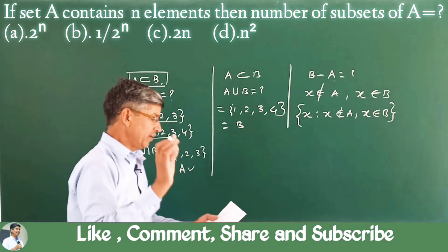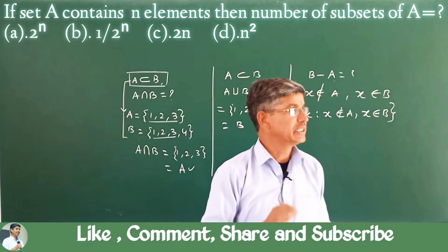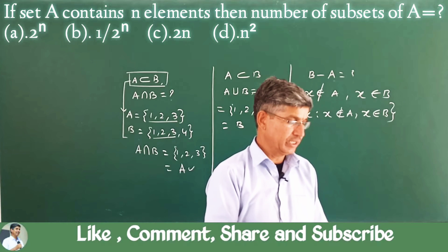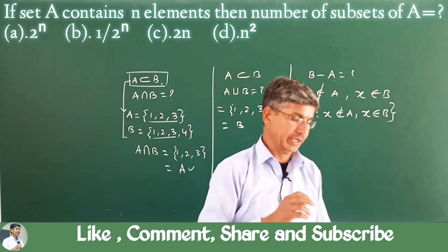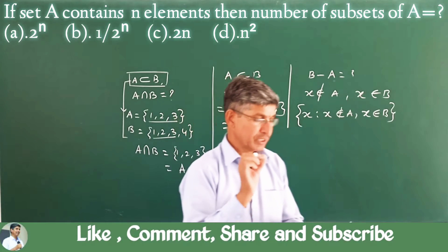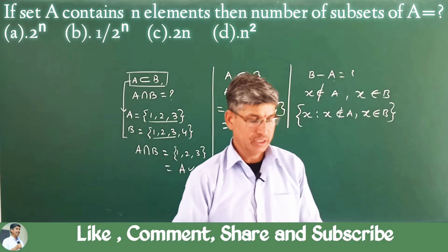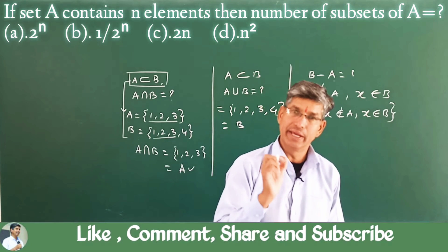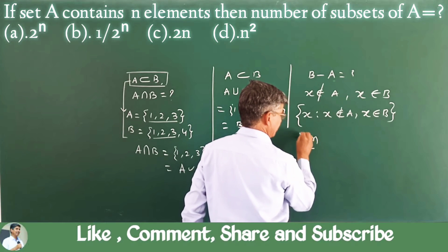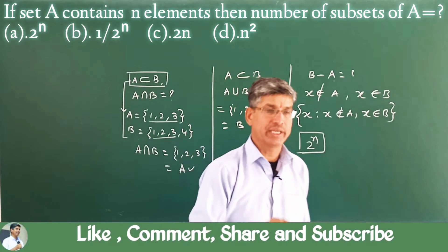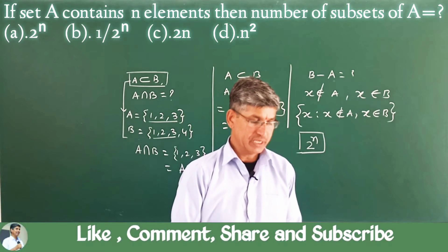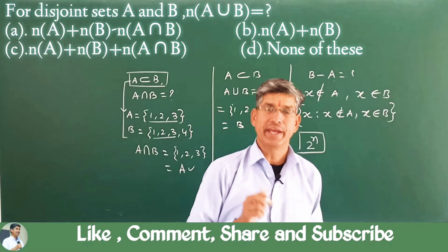Next question: if any set A has N elements, then the number of subsets of A is what? Options are: 2 power N, 1 upon 2 power N, 2N, and N squared. You know that the number of subsets is 2 power N. So the answer is option A, which is 2^N.